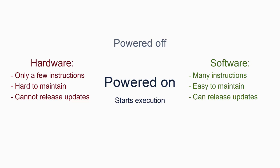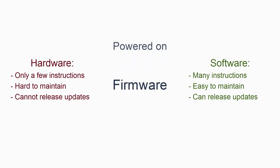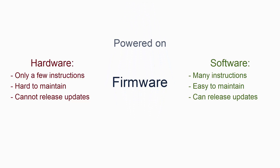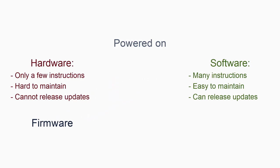All instructions come from some form of storage. Storage built onto specific hardware is often referred to as firmware, as it's designed specifically for that hardware. Other instructions are software, and come from storage mediums such as flash memory and hard disk drives.